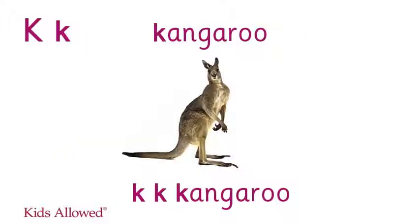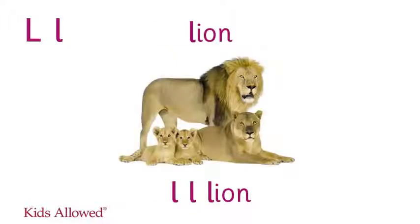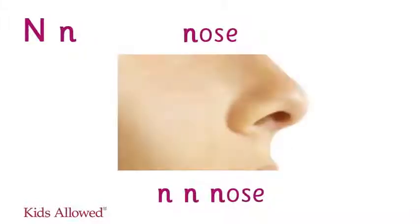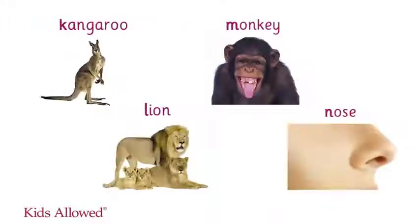C is for kangaroo. C, kangaroo. L is for lion. L, lion. M is for monkey. M, monkey. M is for nose. N, nose.